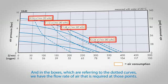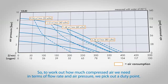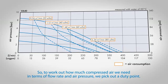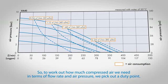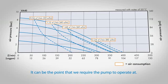So to work out how much compressed air we need in terms of flow rate and air pressure, we pick out a duty point. It can be the point that we require the pump to operate at.